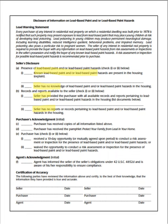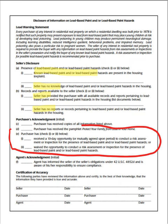You will see that the third section here in the buyer's form is different than in the landlord version. Here we have the chance for the seller to allow the buyer to have that 10-day window to conduct a search, or the buyer can waive it. And if you notice, you still have the initials for the agent here. So this is the form for the buyer and the seller.